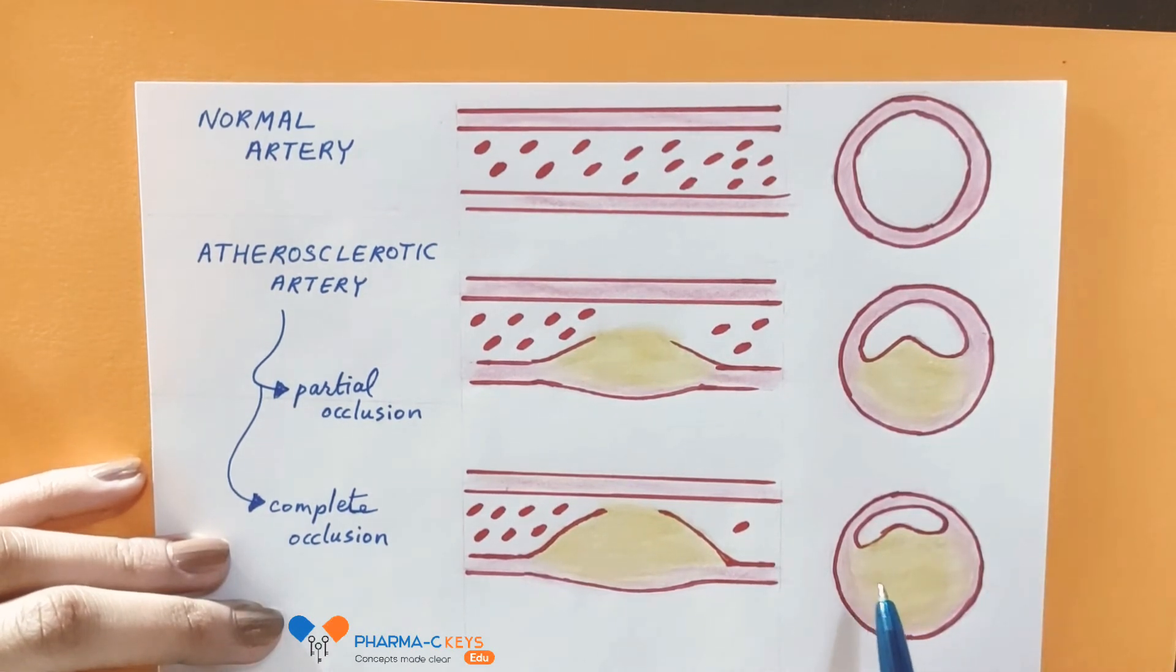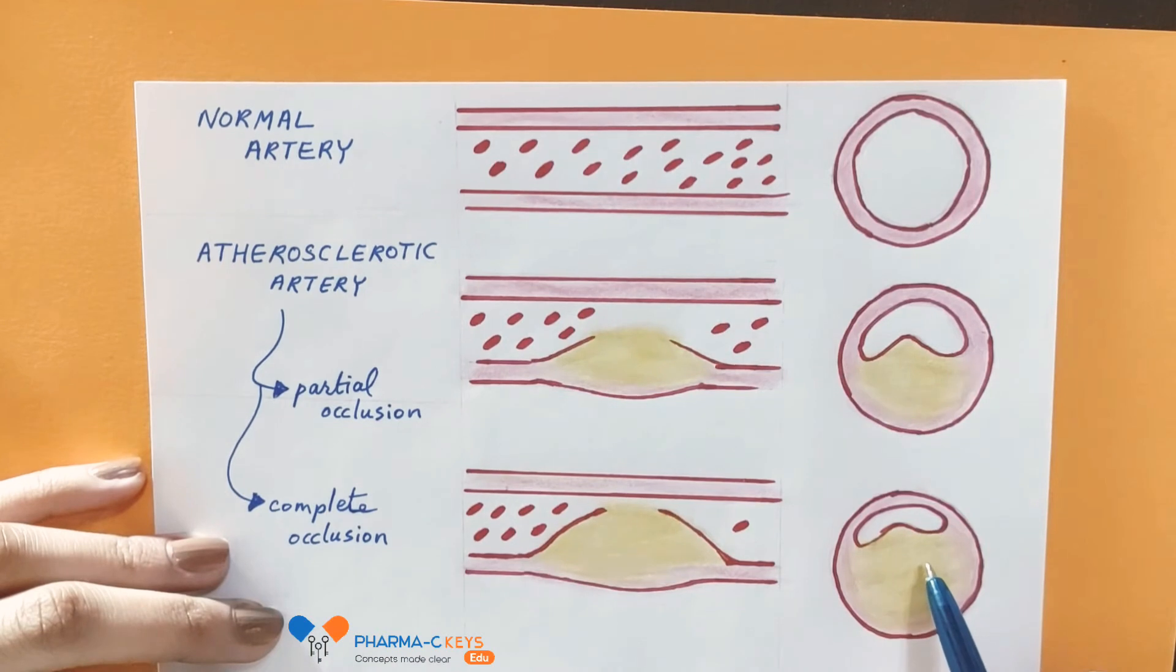While in case of complete occlusion of coronary blood flow, about 70% stenosis occurs in the lumen of the coronary artery, leading to myocardial infarction. This can be managed either by PCI or fibrinolytic drugs.